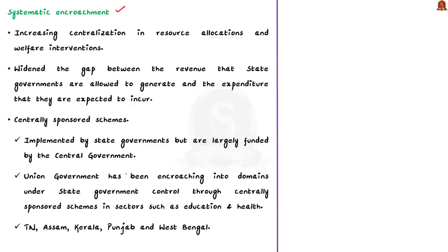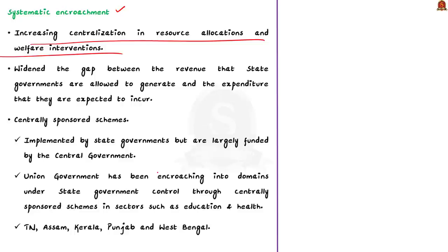The current union government has been increasing centralization in resource allocation and welfare interventions. It has also widened the gap between the revenue that state governments are allowed to generate and the expenditure they are expected to incur. For example, the implementation of goods and services tax has severely impacted the states' power to generate revenue. Another example of encroachment is centrally sponsored schemes — implemented by states but largely funded by the center — which the union government has used to encroach into health and education domains.